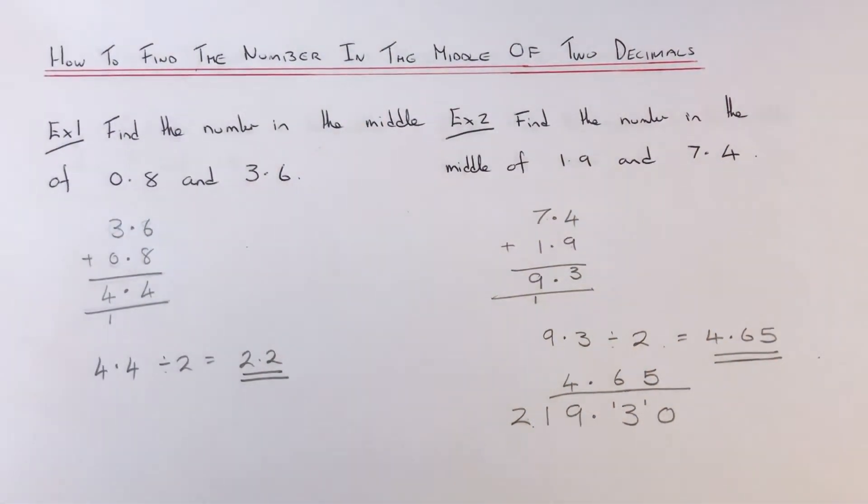So those are your two steps then. Just add the two decimals up and then half the answer or divide it by 2. So thanks for watching guys. See you next time.